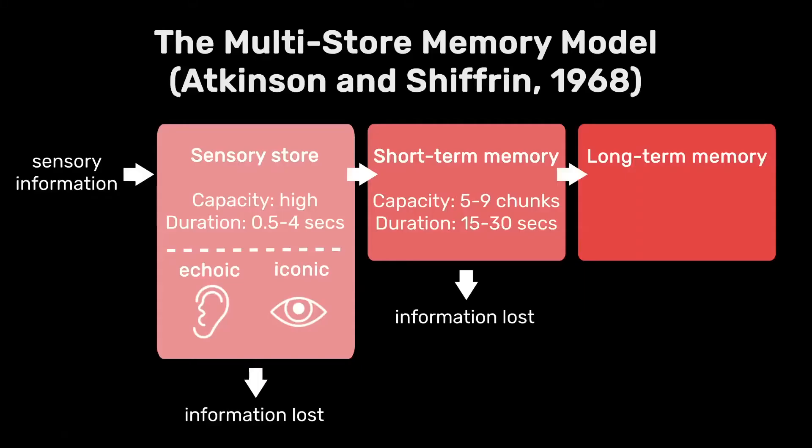Then eventually the information is passed on to the long-term memory store, where according to the multi-store memory model by Atkinson and Shiffrin, you have essentially unlimited capacity.